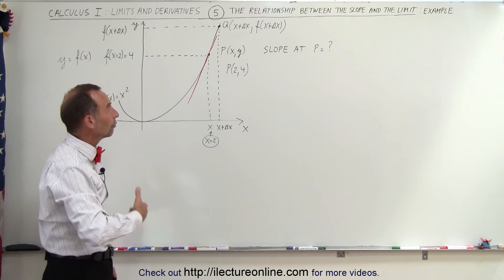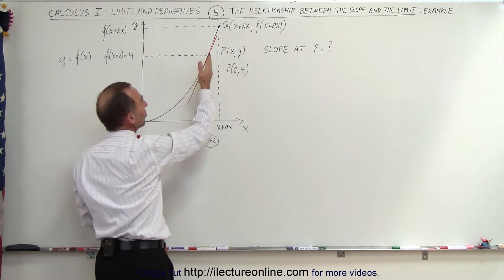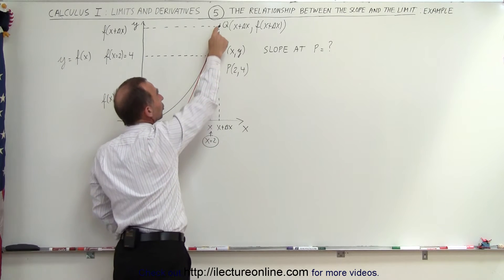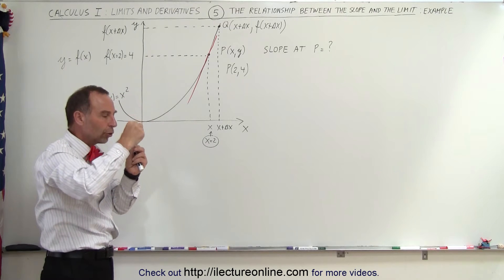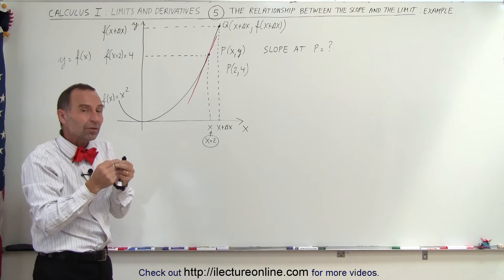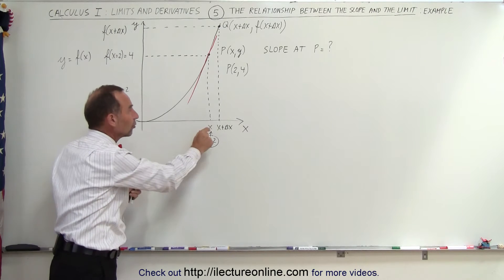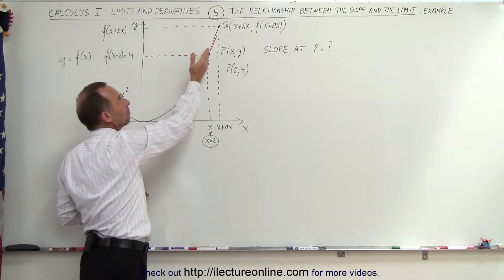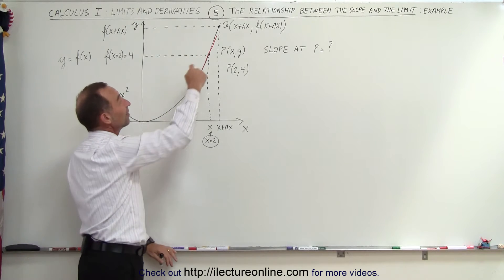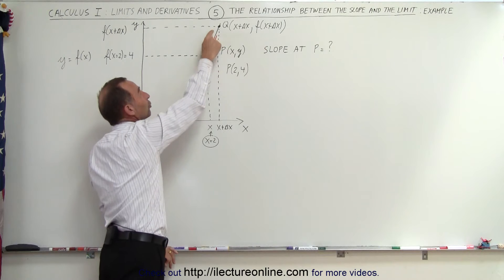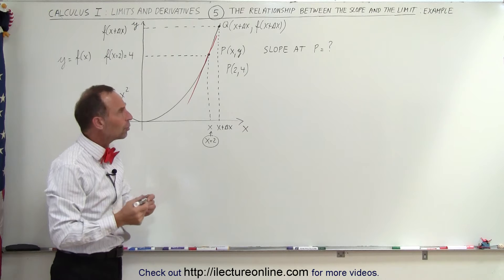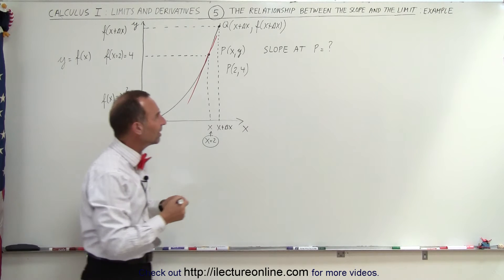What will be the slope at point P? We're going to find the slope of the secant line between point P and point Q, and then bring Q closer and closer to P so that in the limit, when delta x goes to 0, the slope of the secant line between P and Q will equal the slope of the tangent line, shown here in red.